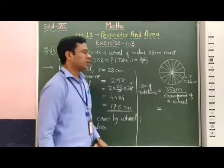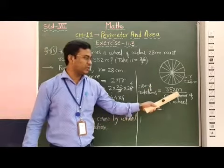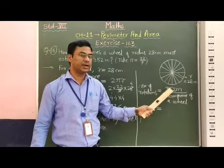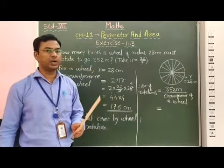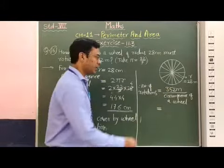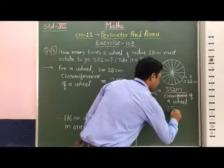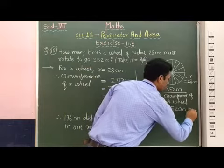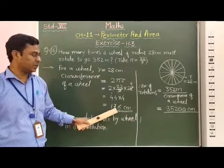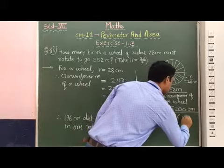Here the circumference is given in centimeters and the distance is given in meters. Therefore, first of all, we have to convert meters into centimeters. We know that 1 meter is equal to 100 centimeters. Therefore, here we multiply by 100, so 352 multiplied by 100 is equal to 35200 centimeters. And the circumference of the wheel is equal to 176 centimeters.